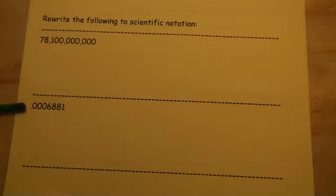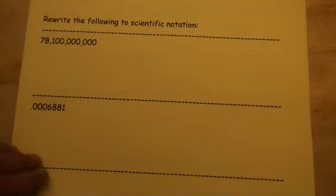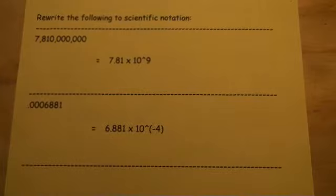And then we have 0.006881. And here's how it all shakes down. Bam! 7.81 times 10 to the ninth power, because we move the decimal place over nine places.